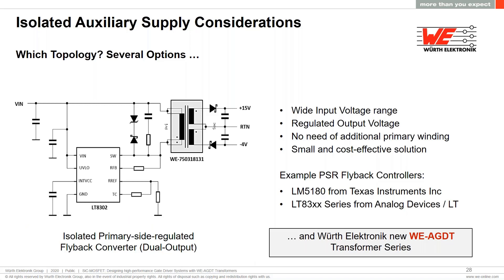The primary-side regulated flyback converter features many advantages: a wide input voltage range, a regulated output voltage without additional regulation stages such as LDOs, no need for an additional primary winding, low component count, and a small, cost-effective complete solution — even though the transformer is used as an energy storage device. Some examples of controllers for primary-side regulated flyback are the LM5180 from Texas Instruments or the LT8302 series from Analog Devices. For the transformer, the new WE-AGDT auxiliary gate drive transformers from Würth Electronic are introduced next.